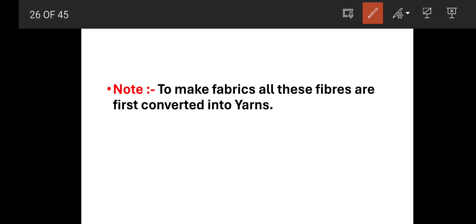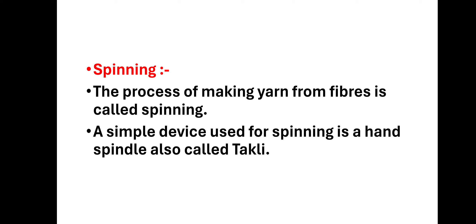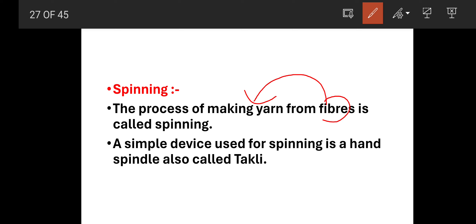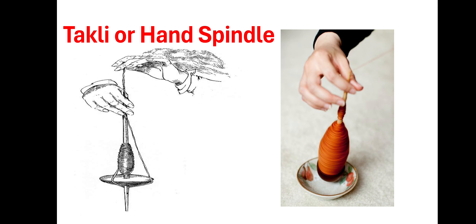To make fabrics, all these fibers are first converted into yarns. Now spinning — the process of making yarn from fibers — fiber से yarn बनाने की जो process है उसको हम spinning कहते हैं। एक simple device होता है जो spinning के लिए use किया जाता है, जिसको हम hand spindle या तकली कहते हैं। See, इस तरीके का होता है।